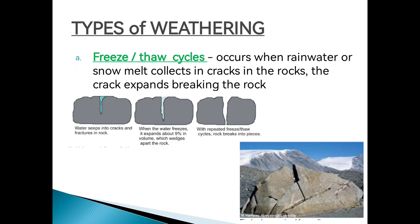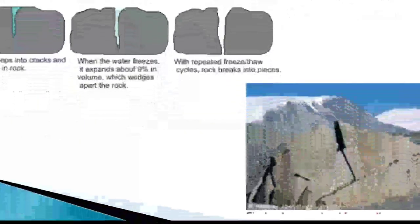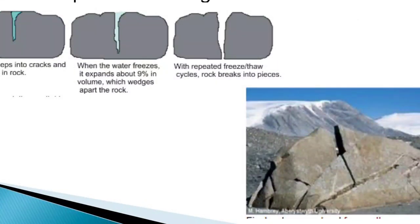Looking at the diagram, you can see that the crack grows bigger over time. After a few years, other parts crack as well until the structure becomes smaller and smaller. Eventually, maybe a million years later, those rocks will become sand, then silt, and then clay.